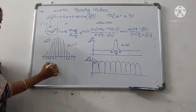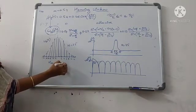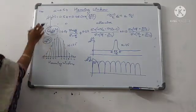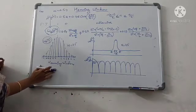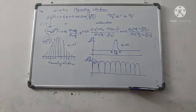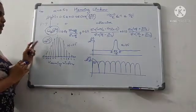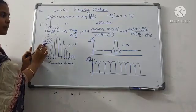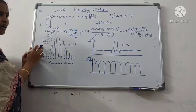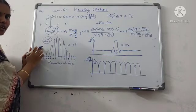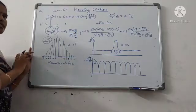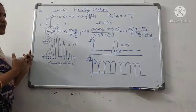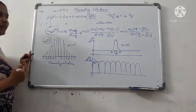This is the Hamming window sequence W_H of n. In order to get a finite impulse response, you multiply W_H of n with H_K(e^jω) to get H of n — the finite impulse response. We are using Hamming windowing techniques to obtain the finite impulse response.